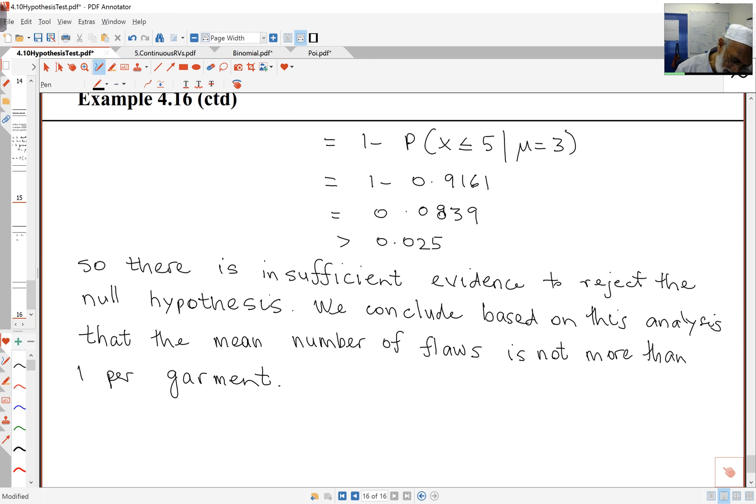Often you'll find people writing this as there is insufficient evidence to reject the null hypothesis at the 2.5% level of significance. It's not just saying we won't reject, it's also stating the significance level.